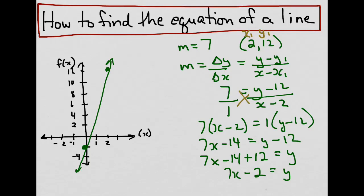This is the equation of our line. Now normally, we would write this with the y on the left side. That's common convention. So we'll just put it over here. y equals 7x minus 2 is the equation of this line.